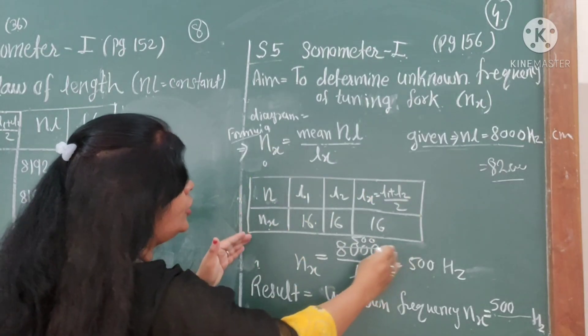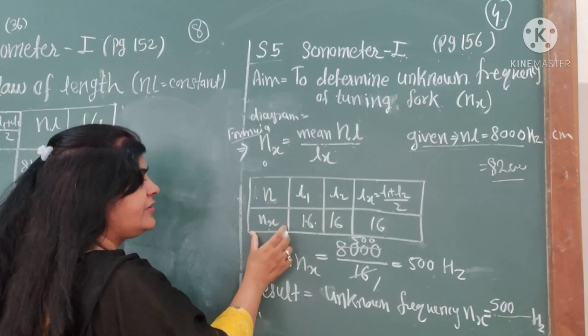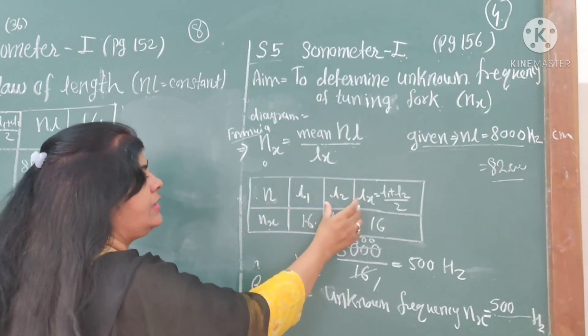Then according to it, draw the observation table. First will be frequency, next is L1, L2, and mean of that reading: LX equals L1 plus L2 divided by 2.